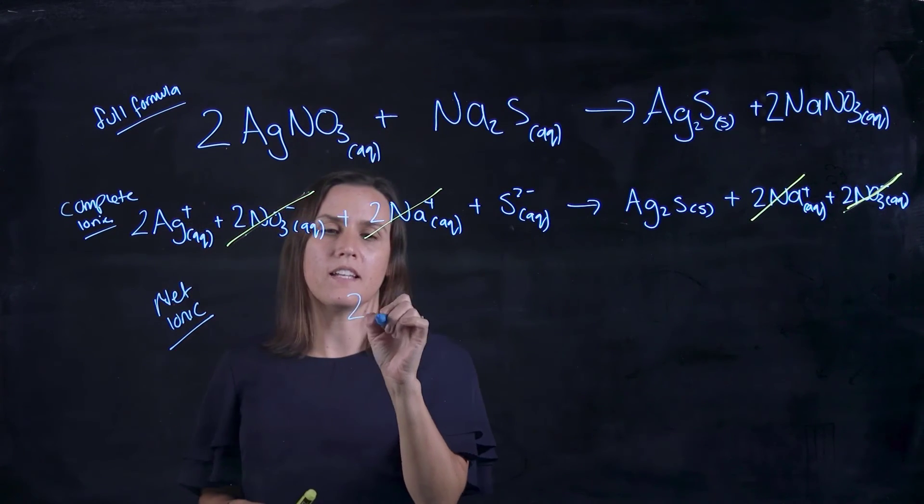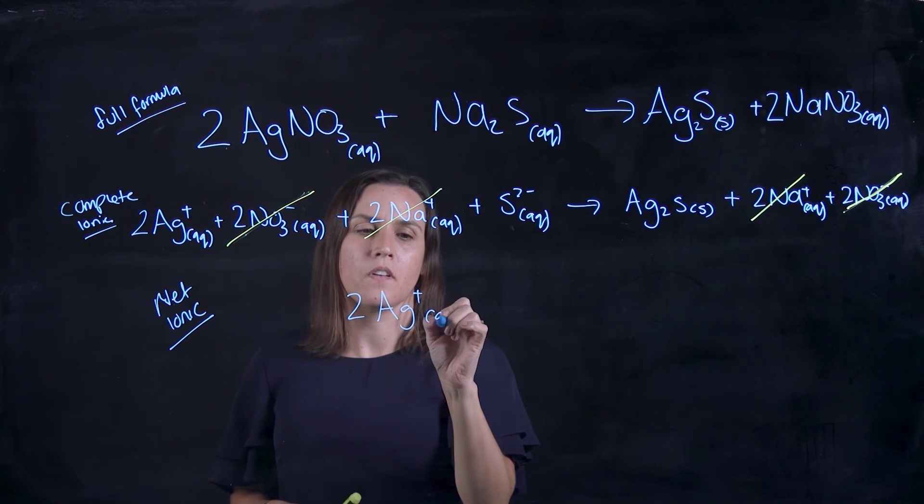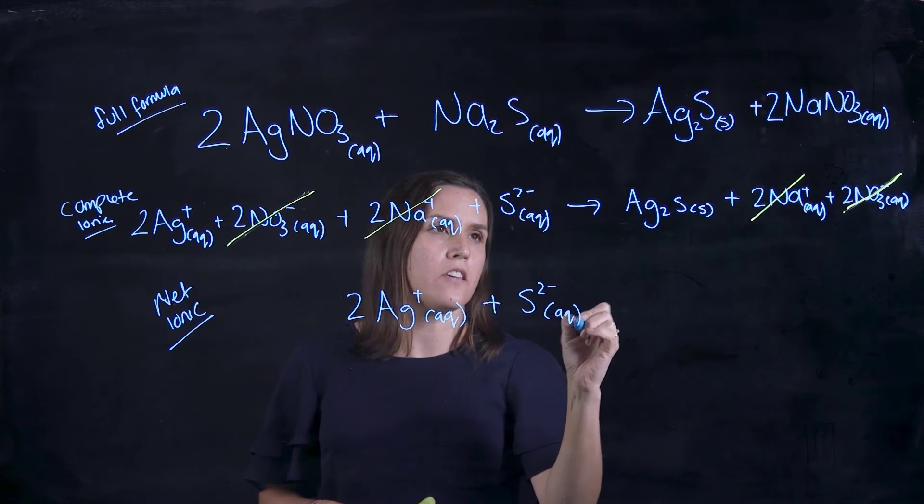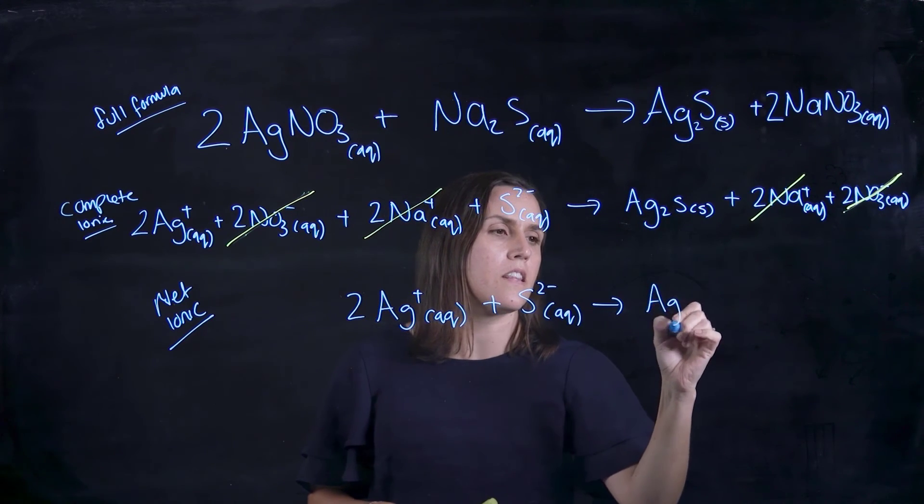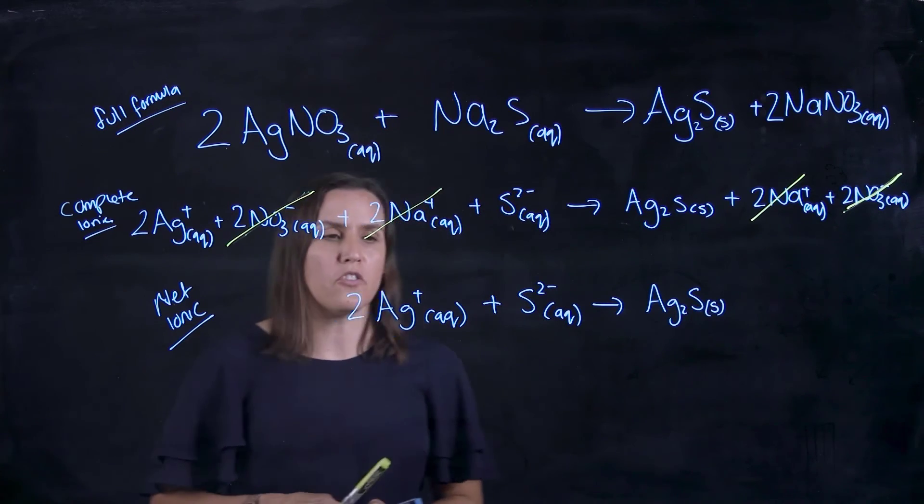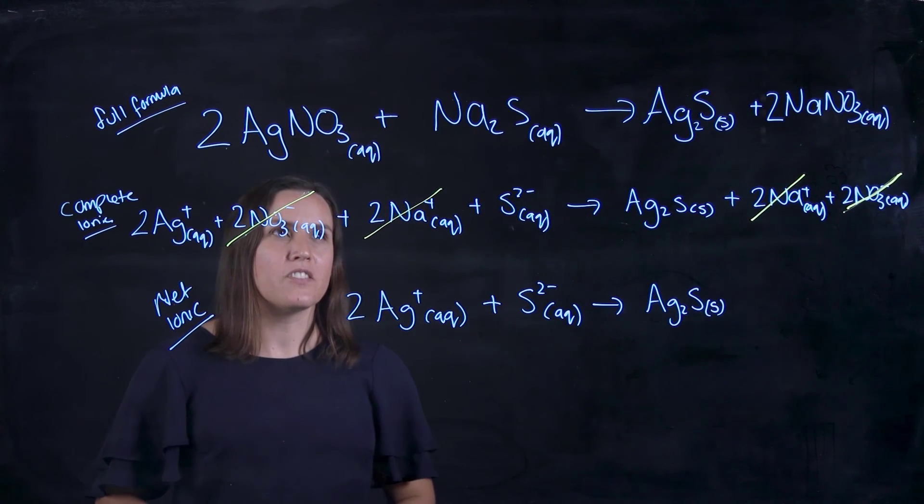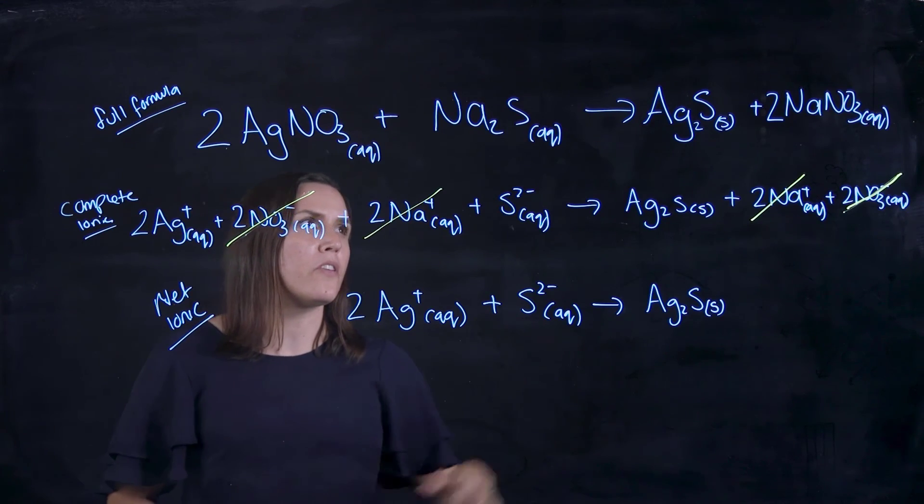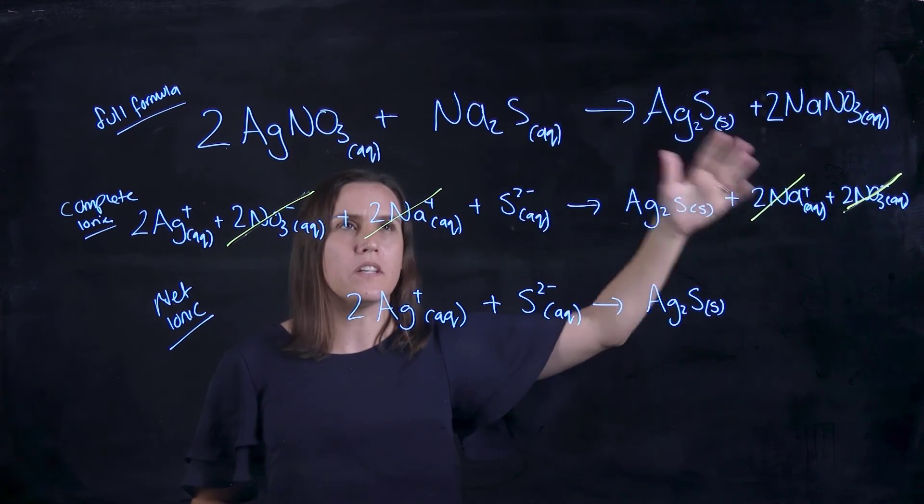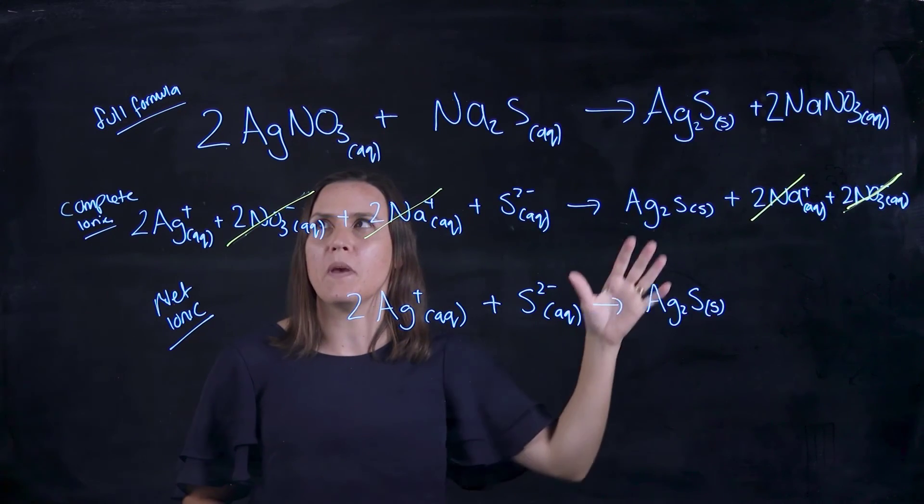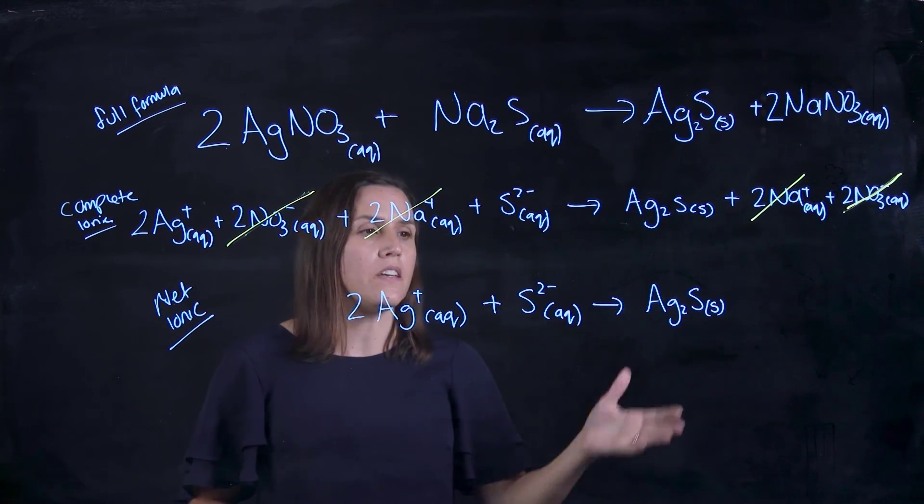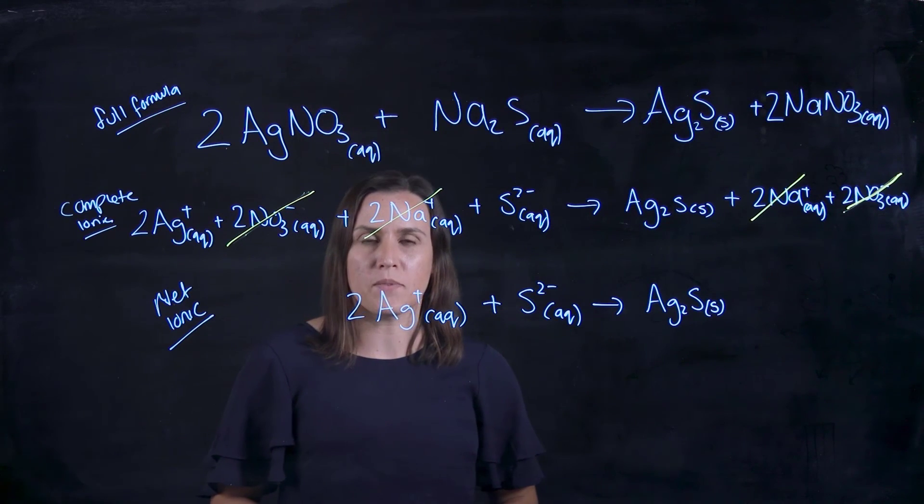So writing that down at the bottom, keeping those aqs and the solids in there, and that would be your net ionic equation. Depending on whether or not you've got a solid or liquid or aqueous components, this will depend on how that net comes out at the end. But for this example here, this is how you would do the three types of equations.